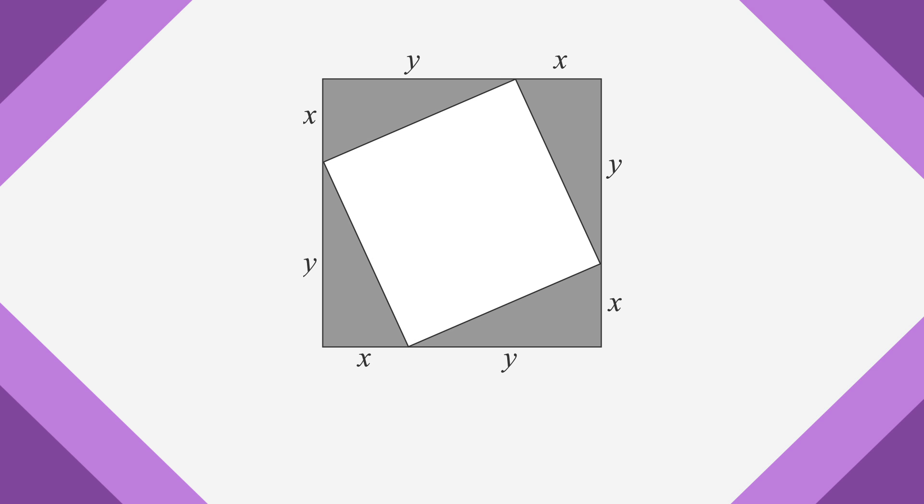At its core, any shaded area problem is a subtraction problem. Take this picture for example. If we wanted to find the area of the shaded region, we would say that it was the area of the total minus the area of the unshaded region. And if we wanted to find the area of the unshaded region, we would say that it was equal to the area of the total minus the area of the shaded region. You'll use these two equations whenever you work with shaded area problems. Remember, we're just using our knowledge of areas to do a subtraction problem.